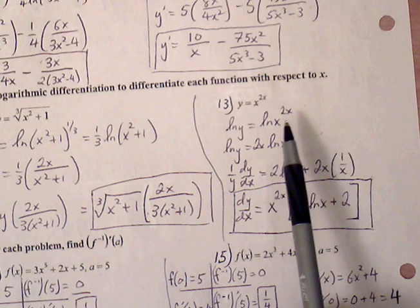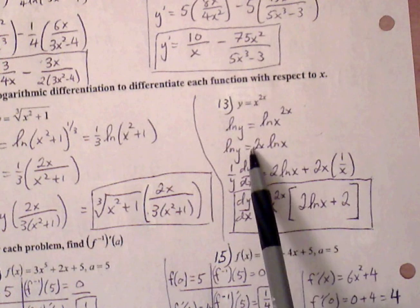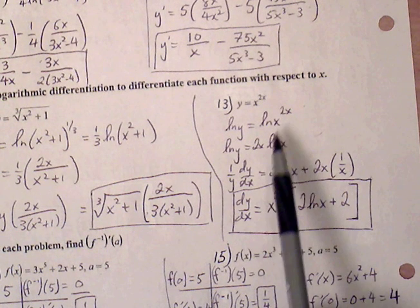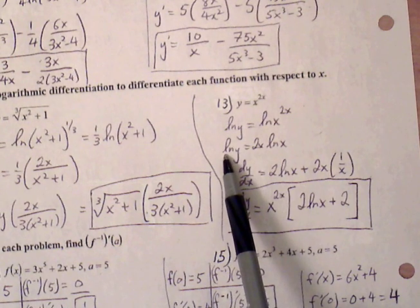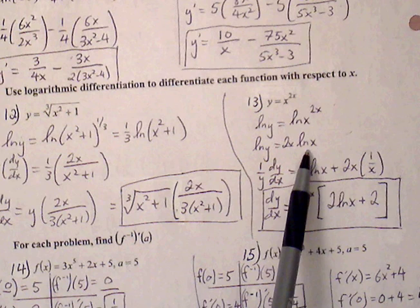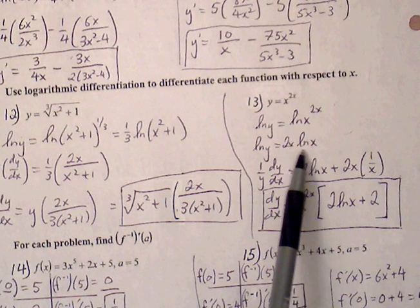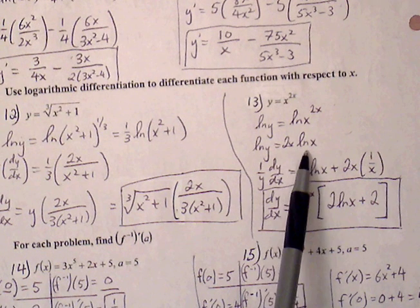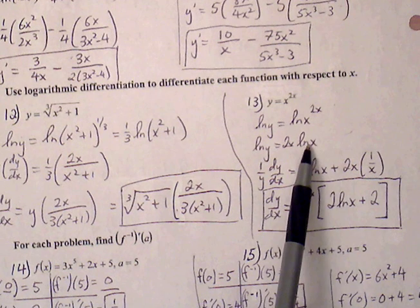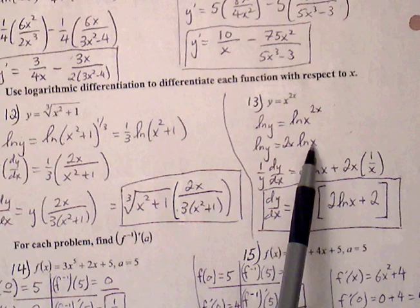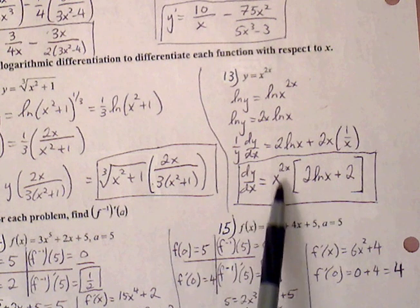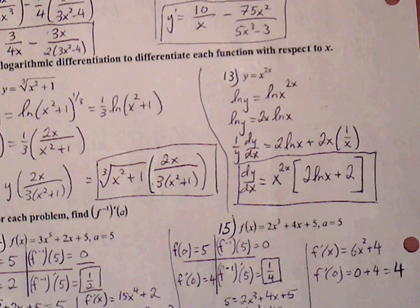Number thirteen: same idea — no logs initially, so take the natural log of both sides. Use the product property to bring the 2x down in front. We haven't found the derivative yet; now that the variable exponent is down, we're ready. The left side, ln y, becomes (1/y)(dy/dx) through implicit differentiation. The right side, 2x times ln(x), requires the product rule: f'g plus fg'. So 2x becomes 2 times ln(x), plus 2x times (1/x). Clean up, bring y to the right side, and replace y with x^(2x), giving x^(2x) times (2 ln x + 2).